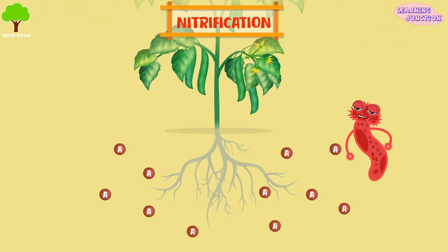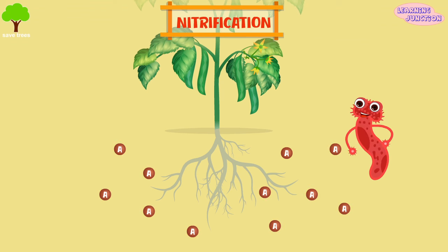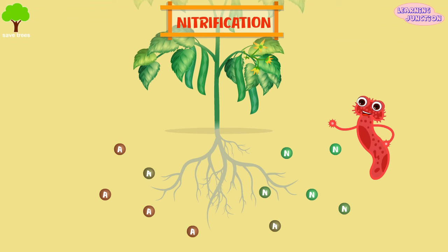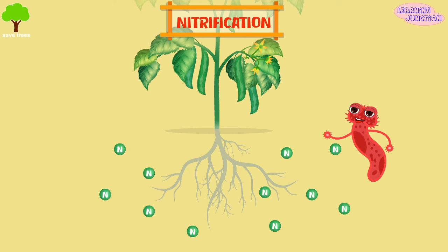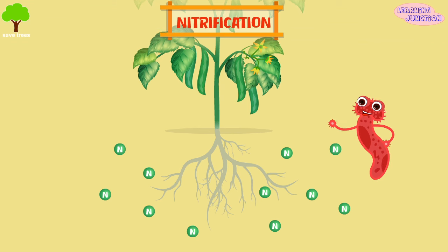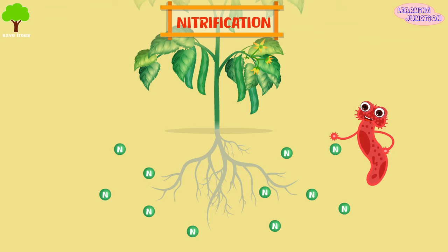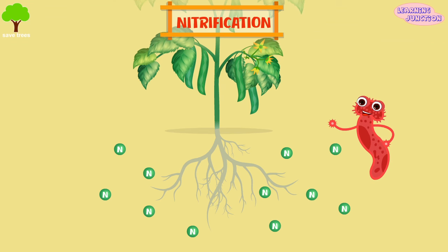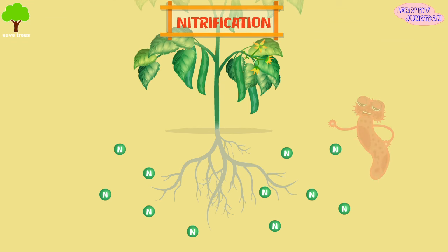Nitrification. In this process, ammonium gets changed into nitrates by bacteria. Nitrates are something that the plants can absorb.